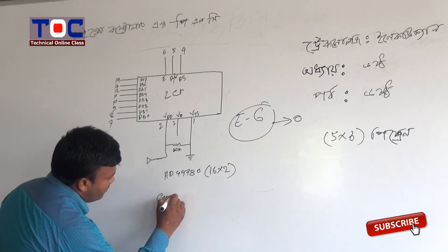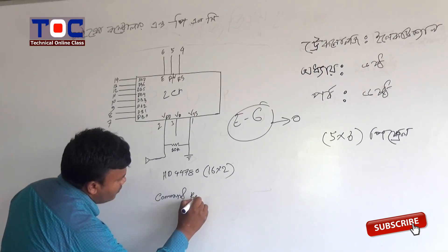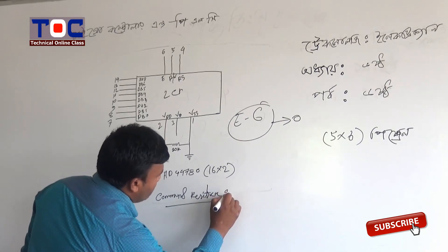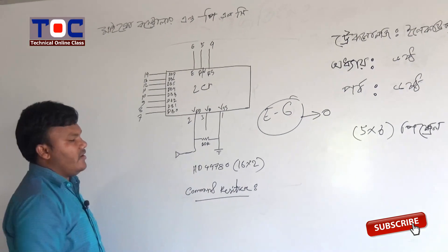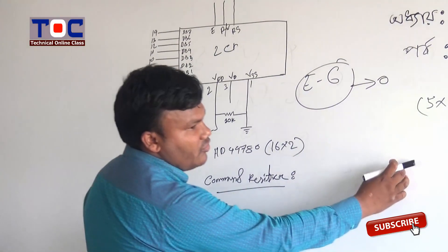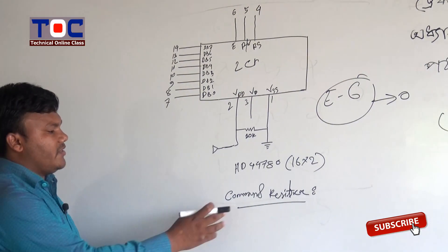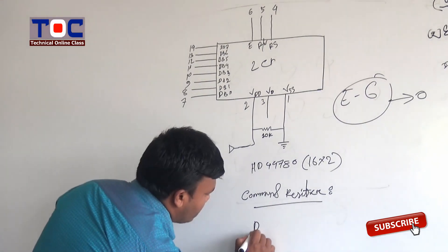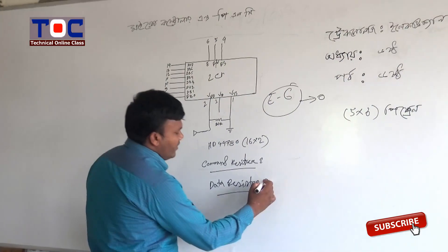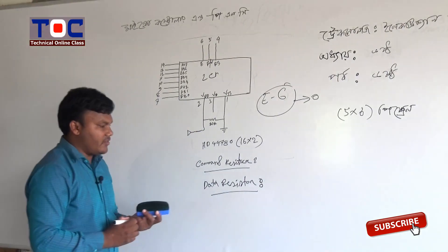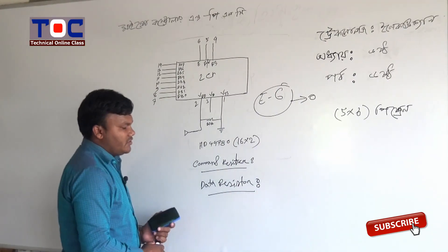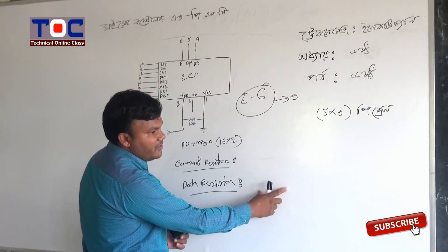The command register — when data is admitted, it is stored there. And it controls what kind of operation is done — what is displayed and how. After that, the instruction register comes, and then the data register. The data register stores data temporarily, holds it, and then sends it to the LCD for display.